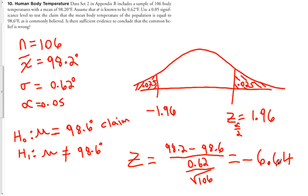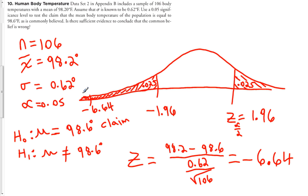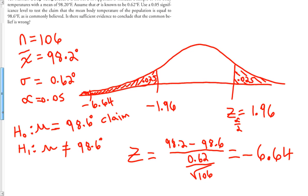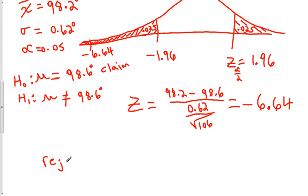Values typically fall within two standard deviations of the mean, but this result is nearly seven standard deviations away — an extremely small value. Negative 6.64 is way out in the rejection region, far past negative 1.96. Because the test statistic falls in the rejection region, we reject the null hypothesis.